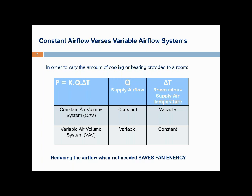The constant air volume system keeps the supply airflow constant and varies the delta T — the difference between room and supply air temperature — by varying the supply air temperature. The variable air volume system works in the opposite way: it varies the supply air volume while keeping the delta T constant by maintaining a constant supply air temperature. This results in the big benefit of VAV systems — by varying and reducing the airflow when not needed, we use much less central air handling unit fan energy, giving significant energy savings.